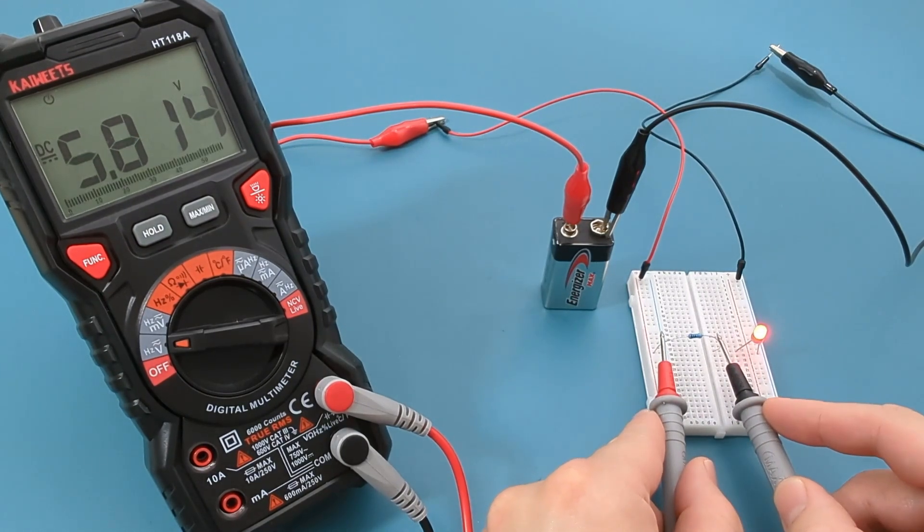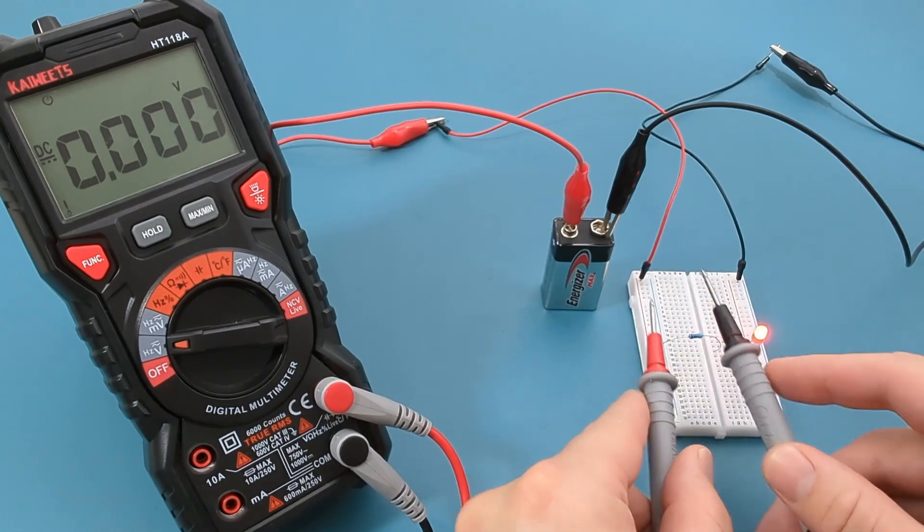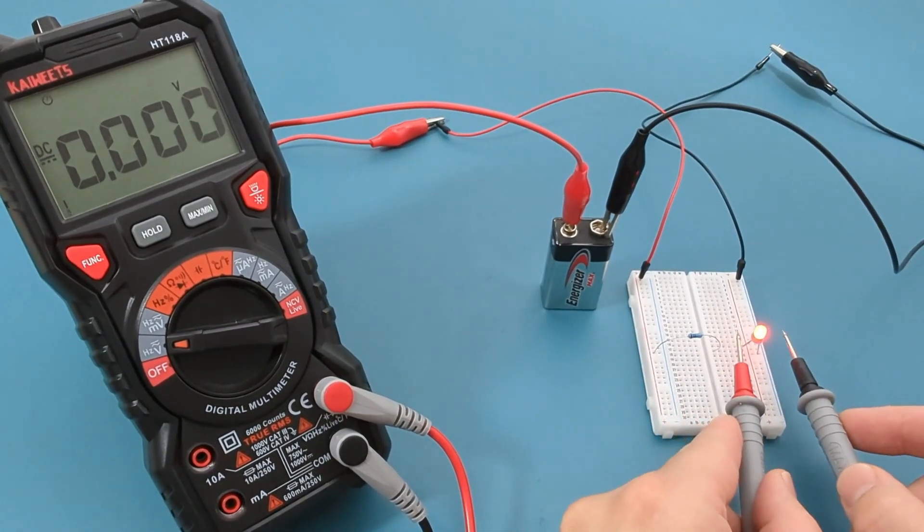As we can see, the reading indicates approximately 7 volts. Let's check the voltage of the LED.